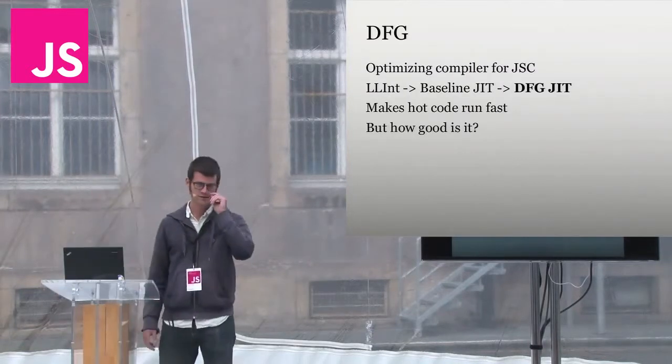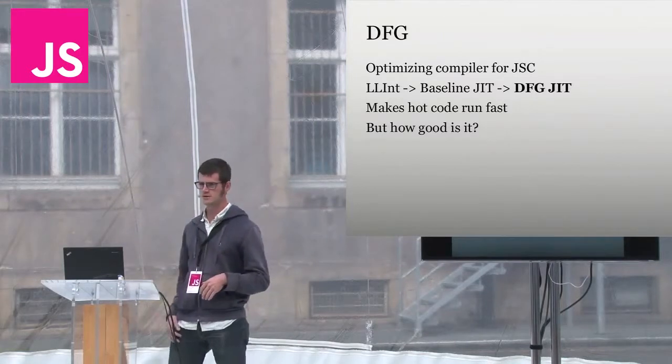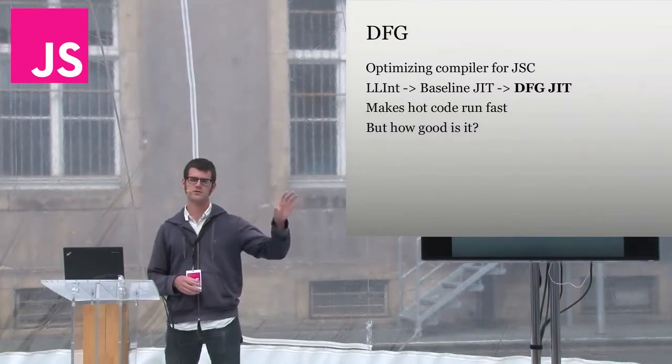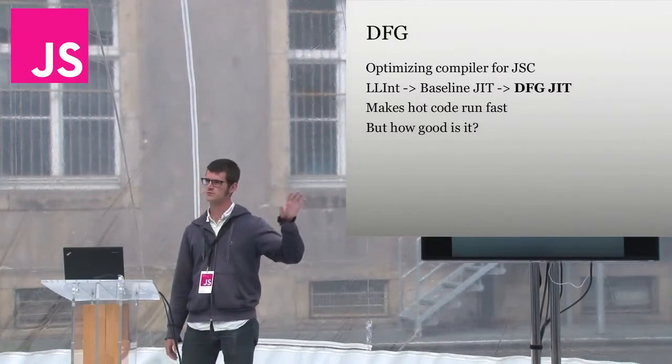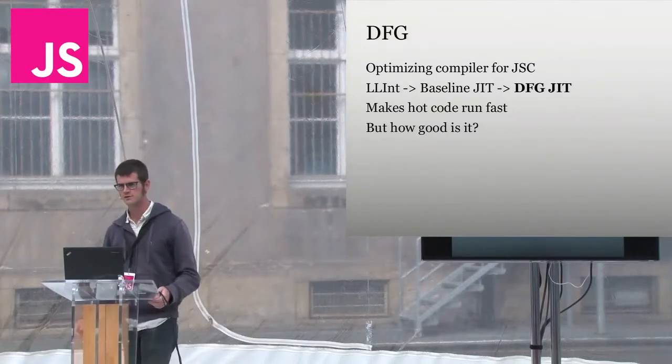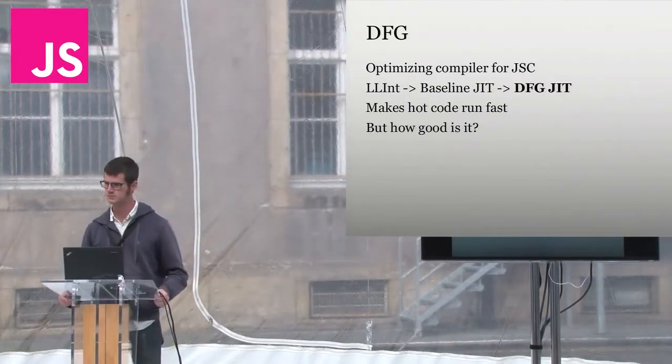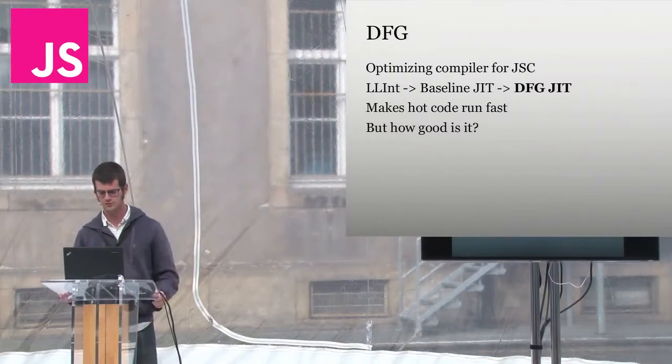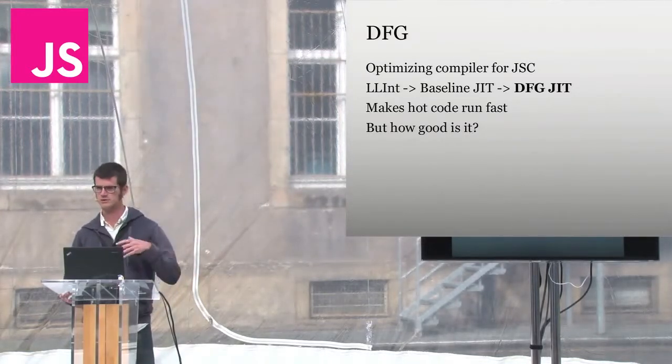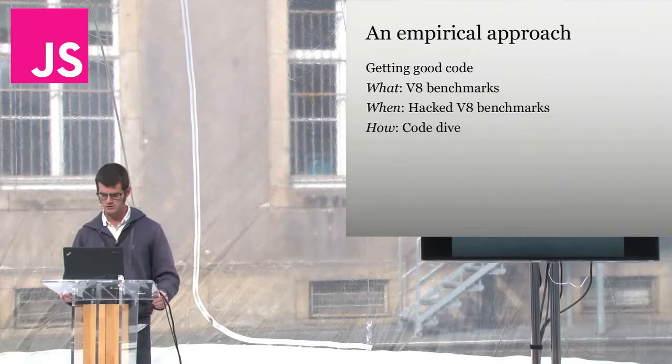So as I mentioned, the DFG is JavaScript Core's optimizing compiler. You know the standard architecture of these JavaScript engines is you have something for dealing with cold code and something for dealing with hot code. And for JavaScript Core, we have the low-level interpreter for very cold code. There's an intermediate phase with what we call the baseline JIT, which is a JIT that doesn't do any global analysis or optimization. And then we have the DFG JIT, which is able to take a bit more time, has a bit more information, and can take a bit more of a global view on your program.